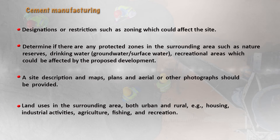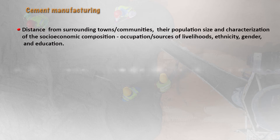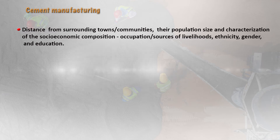The land use in the surrounding area — both urban and rural, including housing, industrial activity, agriculture, fishing, and recreation — has to be written down. The distance from the project site to surrounding towns and communities, the population size, and the characterization of the socio-economic composition need to be described. This includes the occupations and sources of livelihood — whether they are doing aquaculture, basket weaving, jute manufacturing, agricultural activities, coconut farming, or employed in the government sector, companies, or educational institutions.